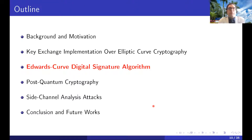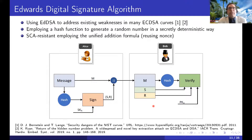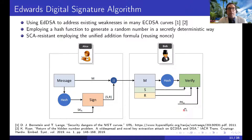We will now speak about the Edwards curve digital signature algorithm. EdDSA addresses some issues in the currently standardized ECDSA by using a deterministic way to generate a random number and employing the unified addition formula, making it more resistant against side channel attacks. In the digital signature algorithm, Alice computes the hash of her message M, then computes the signature SR using her secret key. The message M and signature SR are sent to Bob, who computes the hash of M and verifies the signature SR using Alice's public key.